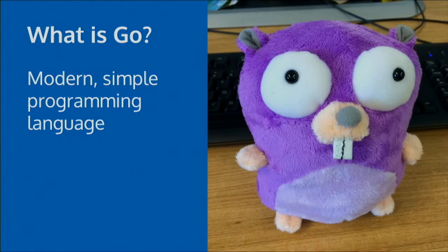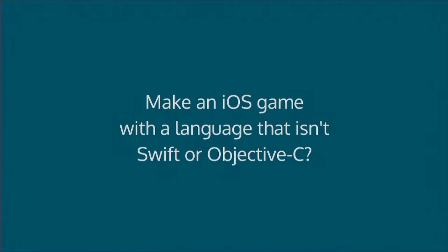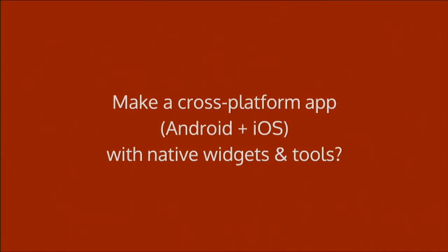Go is also famous for its concurrency primitives — goroutines and channels are central to Go programming. But it would be nice if it were useful for more than just server programming, which is where this talk comes in. It'd be nice to make a game using Go for iOS or Android, or cross-platform formats. A lot of people use PhoneGap or some kind of transpiler, but the Go approach is better because Go compiles to the platform — it's a compiled language — so you don't end up with as many performance problems, though there is some binding involved.